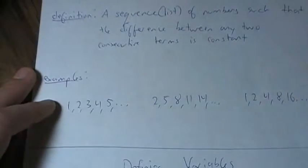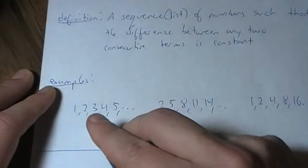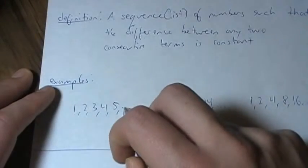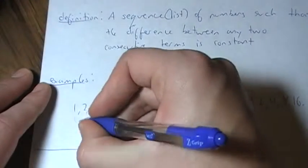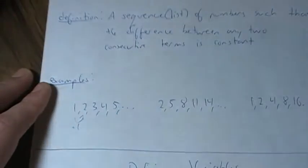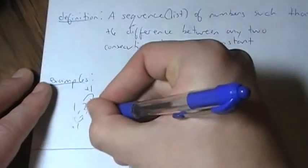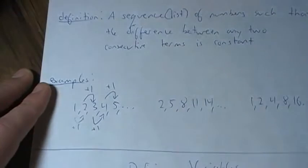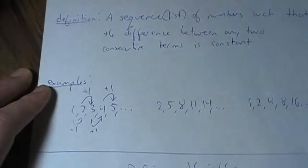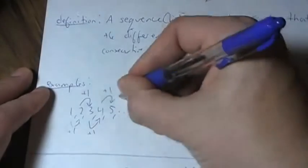Here are some examples. Here's just the whole integers: 1, 2, 3, 4, 5, etc. To go from 1 to 2, you need to add 1. To go from 2 to 3, you also add 1. Same for 3 to 4, and 4 to 5. There is a constant difference, which means this is an arithmetic sequence.